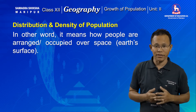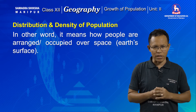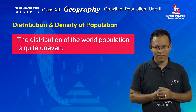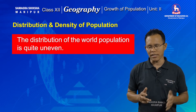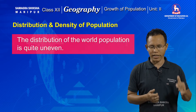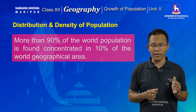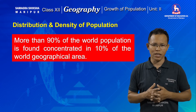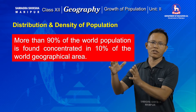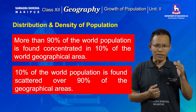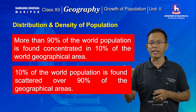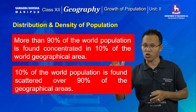There are certain characteristics of population distribution over the world. The first point is that population distribution all over the world is highly uneven. The second point is that it is estimated that more than 90% of the world population is found concentrated in 10% of the land area. The third point is that the remaining 10% of the world population is spread over more than 90% of the land area.